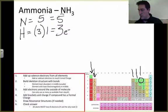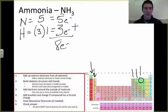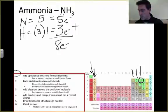I'll just move it over here so it's easy to see. I've got five plus three means I've got eight electrons to build my structure. So I've done number one.